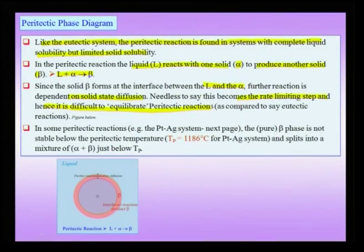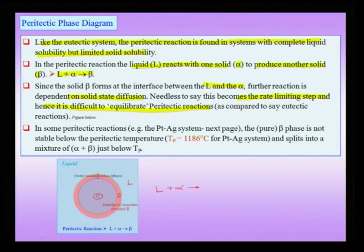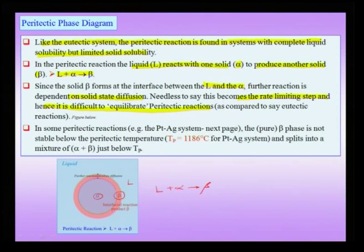To understand the peritectic reaction: I have a liquid and an alpha phase. This liquid reacts with alpha to produce the interfacial reaction product, beta. Since beta is a solid phase, if further reaction is to take place and this beta separates the alpha and liquid in three dimensions, there is no contact between alpha and liquid — implying diffusion must be involved.